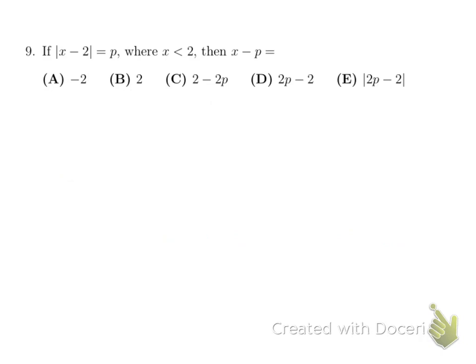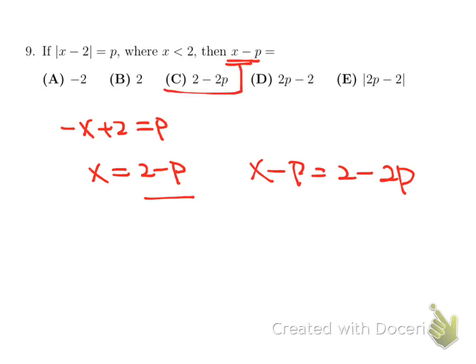Let's look at number 9. So, in this case, we have an absolute value equation, and then notice that x is less than 2. So, x minus 2 must be negative. In other words, this becomes negative x plus 2 equals P. So, then here we get x must be equal to 2 minus P. But what I'm looking for is x minus P, so then when you're subtracting 2 minus P by P one more time, we get x minus P must be equal to 2 minus 2P, which is choice C.